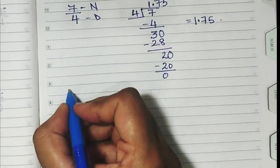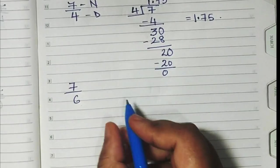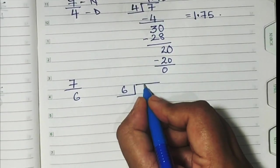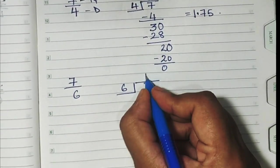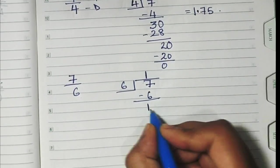Now, let us take another example, say 7 by 6, again let us divide this. 6 ones are 6, 1 remains down.